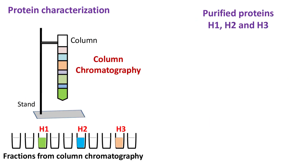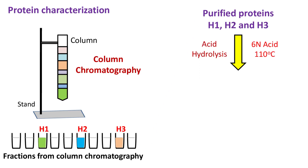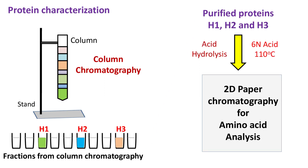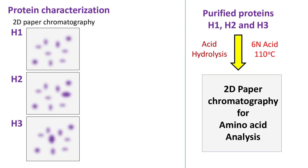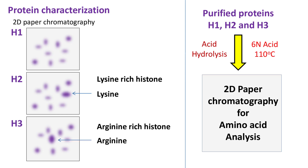The proteins purified by column chromatography were hydrolyzed and their amino acid analysis was done by paper chromatography. The H2 fraction was rich in lysine, hence it was called lysine-rich histone. The H3 fraction was rich in arginine, hence it was called arginine-rich histone.